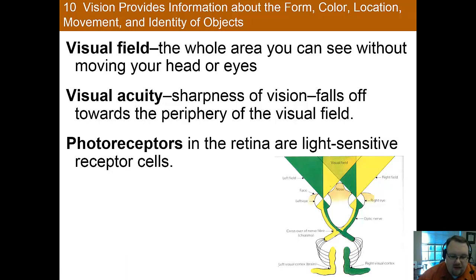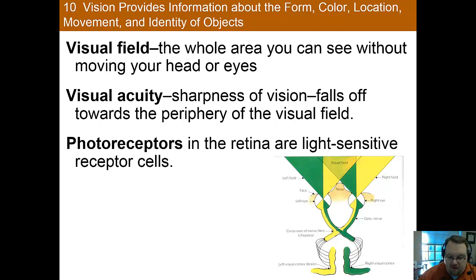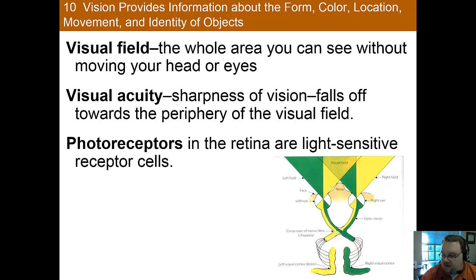And then photoreceptors. Photoreceptors are rods and cones, and they are the light-sensitive receptors that transform light into neural impulses. As with every sense, there's some mechanism by which transduction occurs. For vision, it's these photoreceptors.